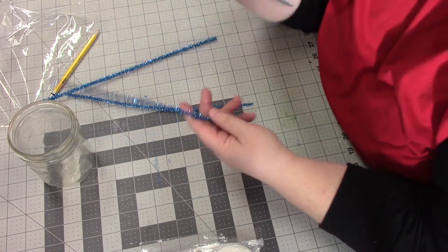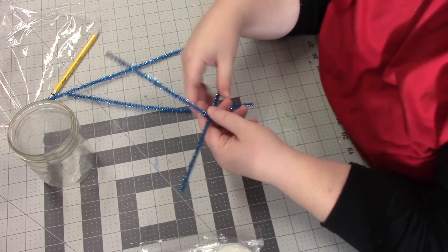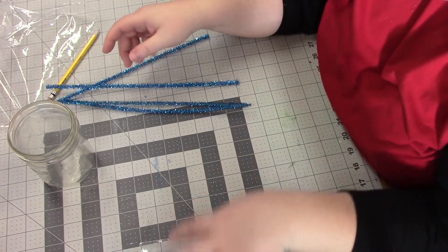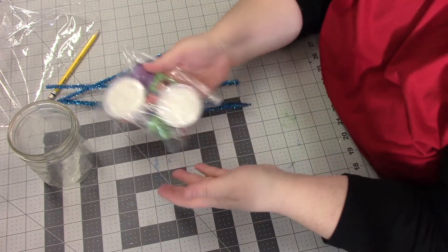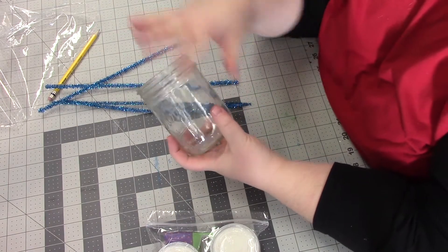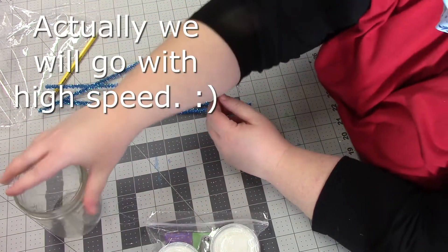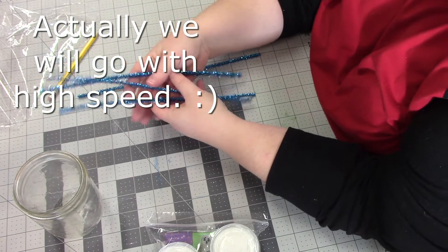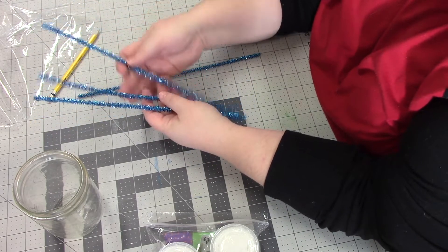So your first step is going to be using your pipe cleaners, bending and twisting them to make kind of a snowflake shape. Then we are going to boil some hot water, dissolve this, and then we're going to basically just dangle the pipe cleaners in a cup. So I am going to hit pause and I am going to basically make these into a snowflake shape and then we will come back.